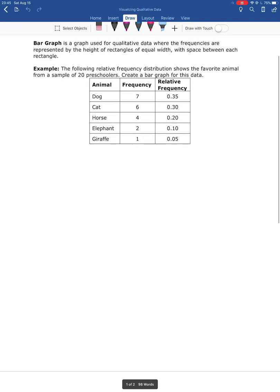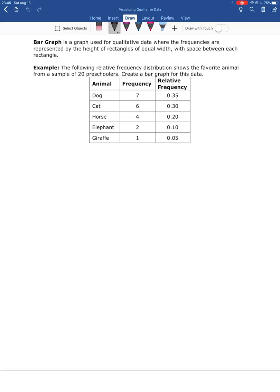So I'm gonna go ahead and I'm going to start by drawing a vertical line and a horizontal line. And then underneath the horizontal line, I'm gonna go ahead and label that with the variable, and that variable again was favorite animal or animal. And I'm gonna create a space for each of the animals that we saw, so we had dog, we had cat, we had horse, we had elephant.